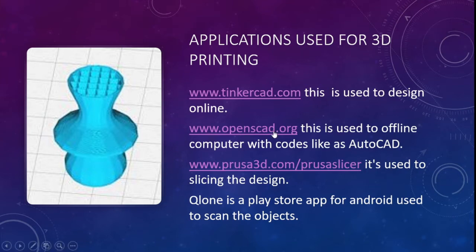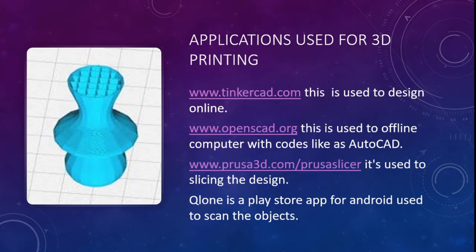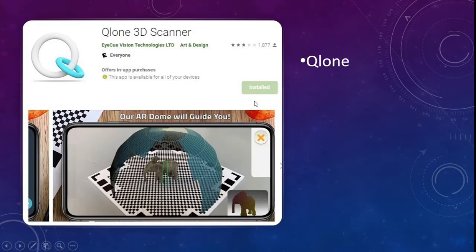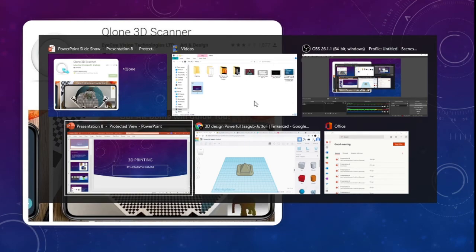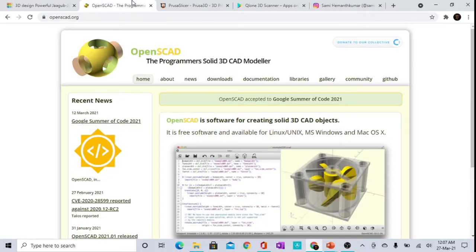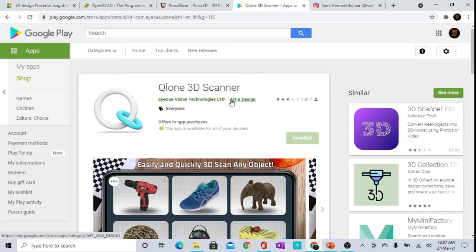Slicing means defining the internal structure of the design — especially important for objects taller than an inch — to set the standard parameters. As I mentioned, scanning or designing must happen to get an object 3D printed. Qlone is a Play Store app for Android devices used to scan objects. Here, let me show it in my web search — the Tinkercad app and Qlone app.